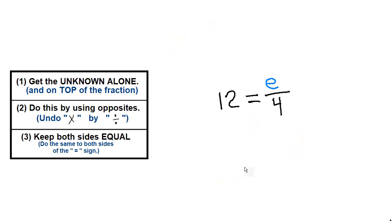Here I put our steps — our main keys. Get the unknown alone and on top of the fraction. That's the main thing. How do you do that? You do opposites and keep both sides equal.